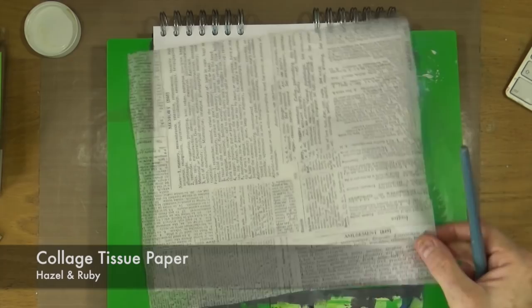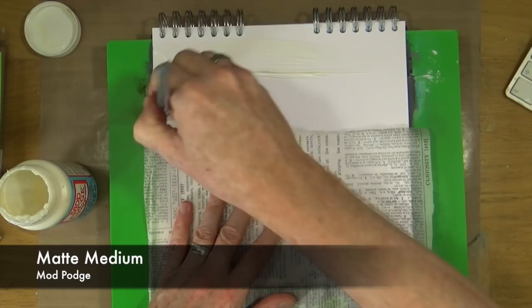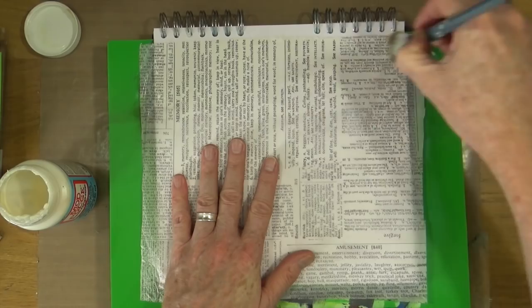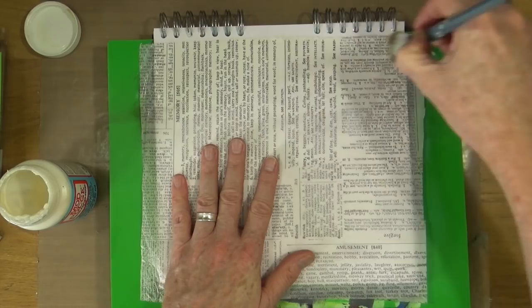Today I'm working in my 10 by 10 journal and I have some old collage tissue paper from Hazel and Ruby that I want to use up. I'm going to stick down an entire big piece, not tear it up or anything. I'm going to keep it in one piece.